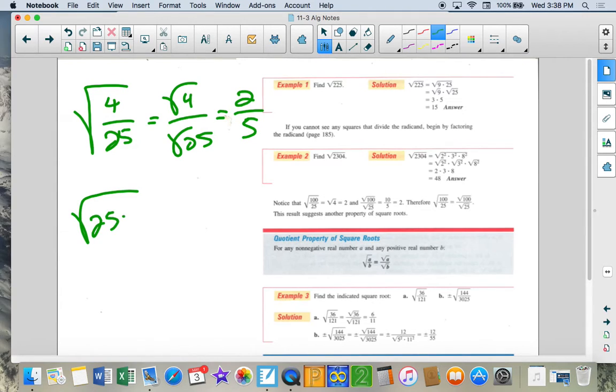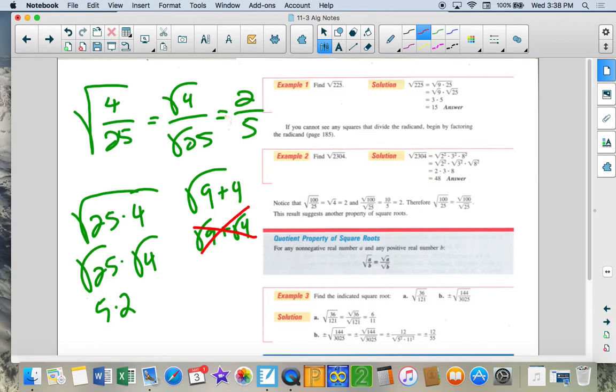When they're being multiplied, we can separate those into separate radicals. The only thing we can't separate is subtraction and addition. So if we have, we cannot separate this to this. That is not applicable.